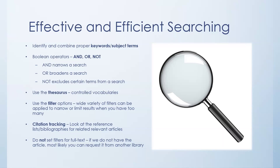Citation tracking is another great feature. In OneSearch and research databases, you can look at the reference lists or bibliographies for articles and connect directly to the cited works. In OneSearch, you can also find subsequent articles that cited the current article, giving you more depth for finding related, relevant articles. I also recommend that you don't set your filters for full text only — if we don't have an article, you can most likely request it through interlibrary loan, so don't limit yourself right off the bat.